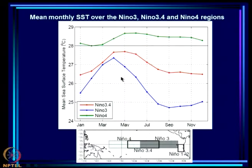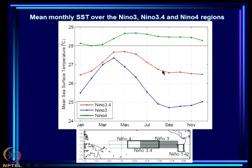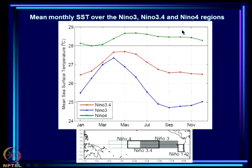Looking at the same graph without Niño 1+2, you can see better the variation of the other regions. Niño 3 has a rather sharp peak in April with much more seasonal variation. Niño 3.4 shows less variation, being above 27° for about 4 months from March, and even in August it is not far below 27° — so 1 degree or slightly more would take it to 28°. Niño 4 is always above 28°.